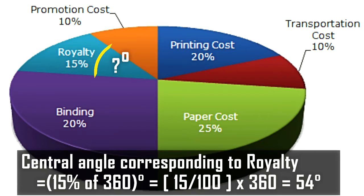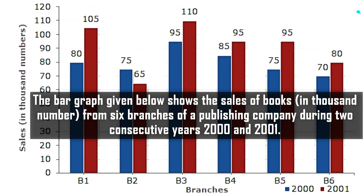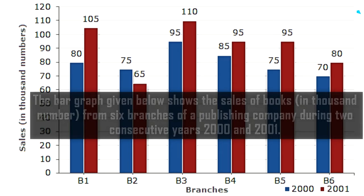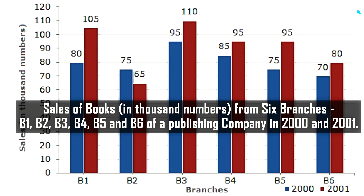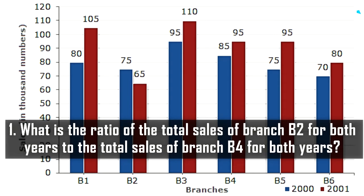Now let's see a bar chart. The bar graph shows the sales of books in thousands from six branches of a publishing company during two consecutive years, 2000 and 2001. One axis shows sales in thousands, the other shows branches B1 through B6. Blue bars represent the year 2000 and red bars represent the year 2001.